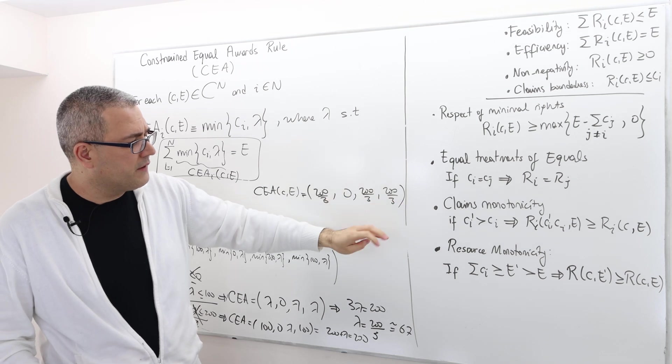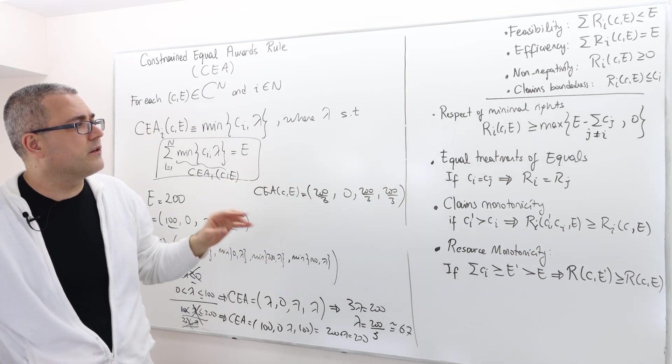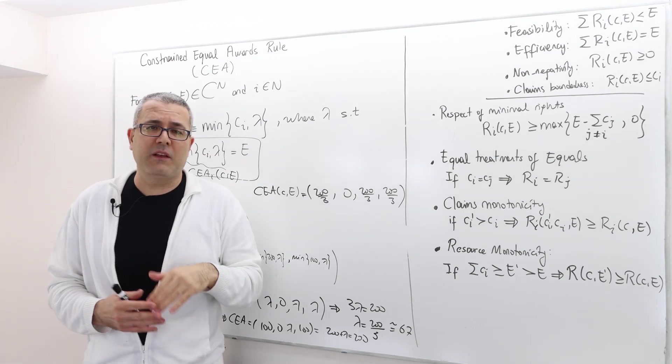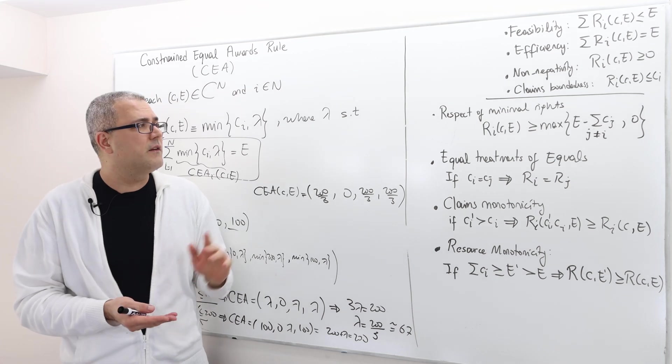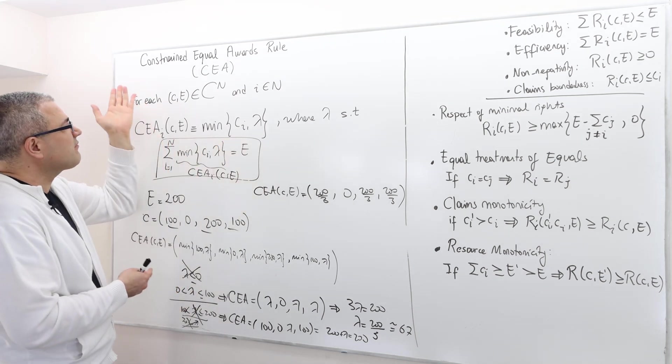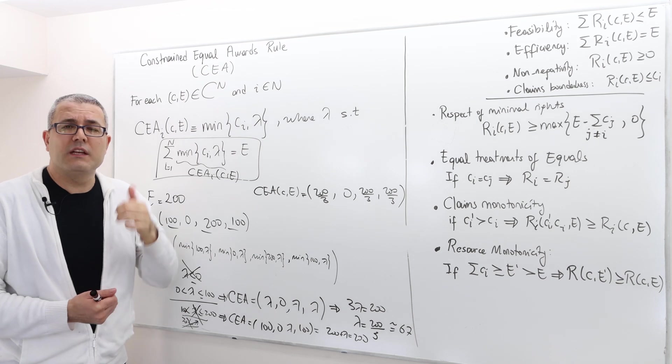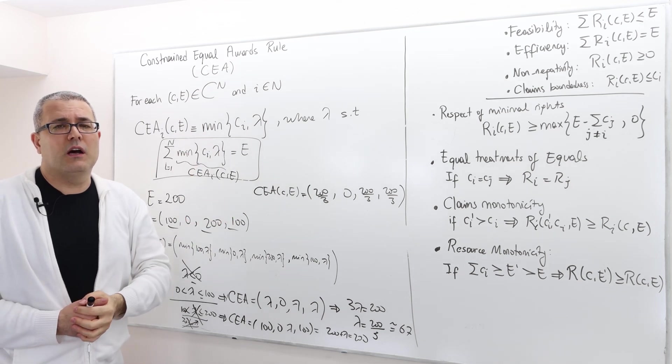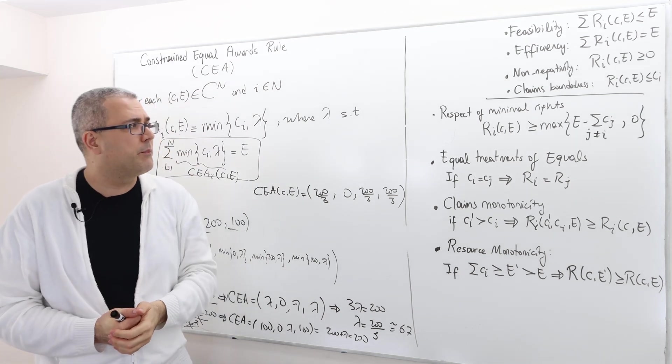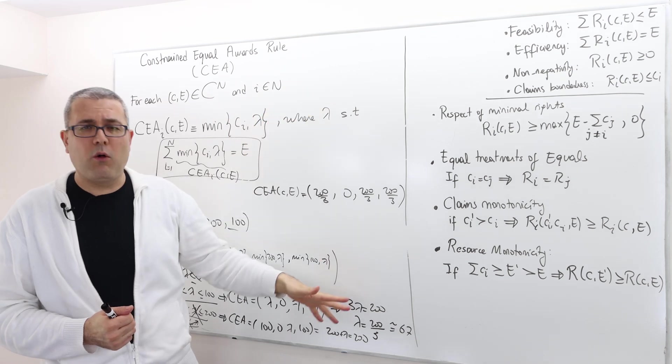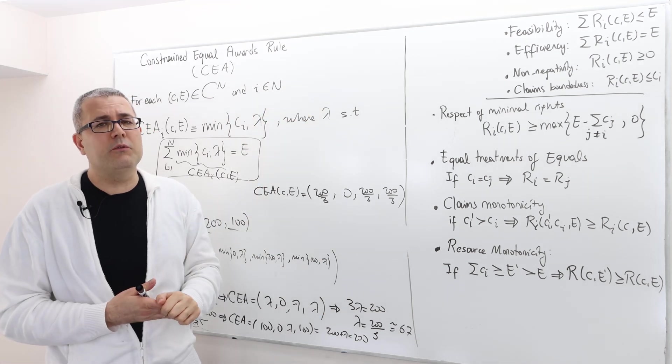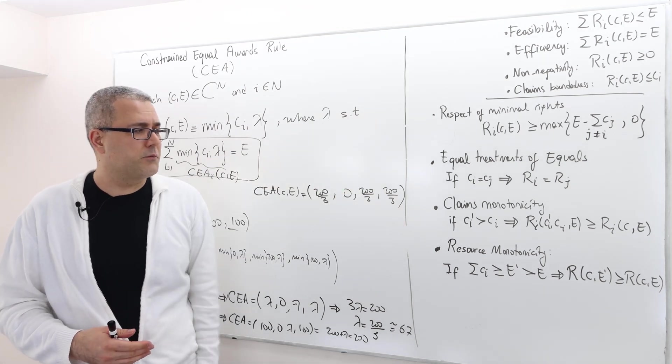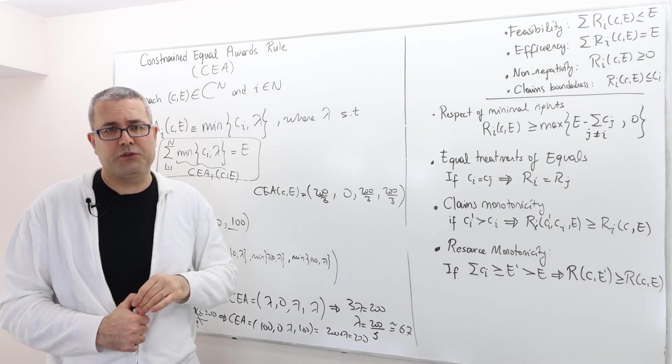The claim monotonicity, the resource monotonicity, and respect of minimal rights are not probably that straightforward, so I leave them as an exercise. But let me give you one hint: for this rule, constraint equal awards rule, same was true for proportional rule. Both of them, and actually the two other division rules I'm going to talk about in the next two episodes, satisfy all those properties. So all you have to do is to prove that this rule satisfies respect of minimal rights, claims monotonicity, and resource monotonicity.